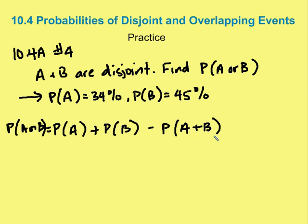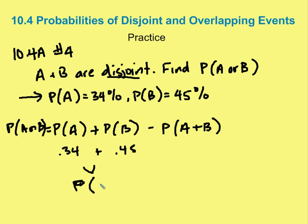We know the probability of A and B is zero, because by definition, if events are disjoint or mutually exclusive, the two events never happen together. So all we need to do is add P(A) = 0.34 plus P(B) = 0.45, and we get the probability of A or B equal to 0.79, or 79%.